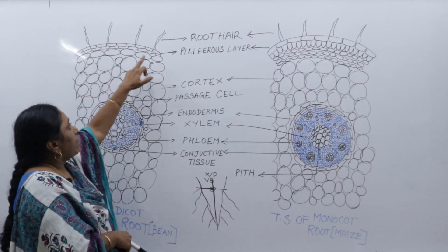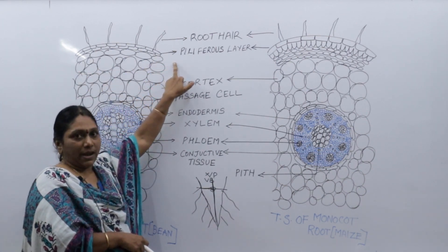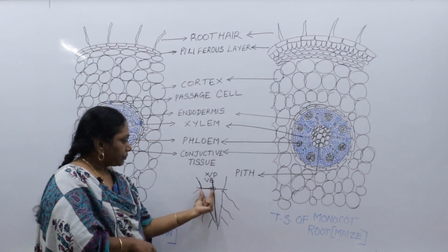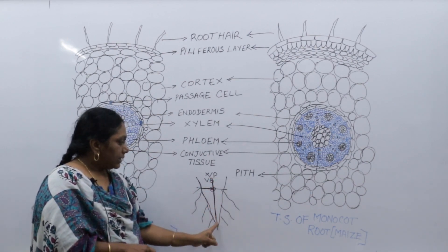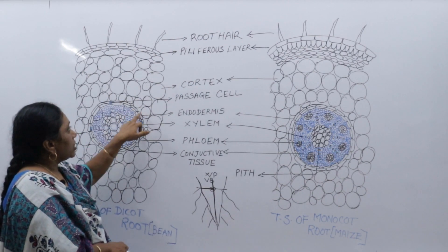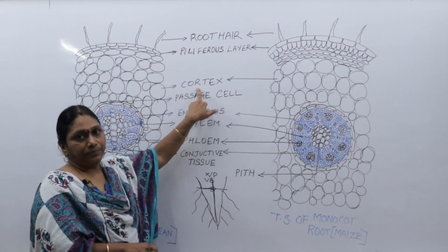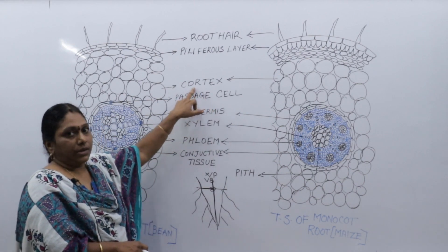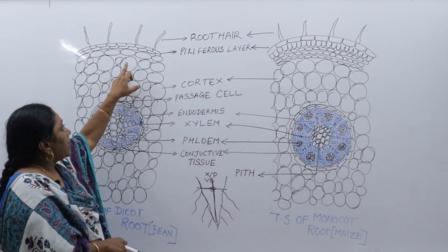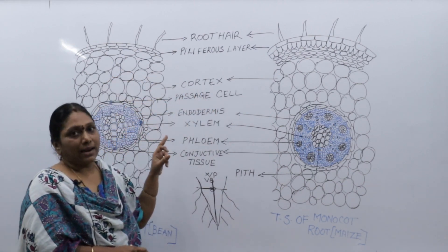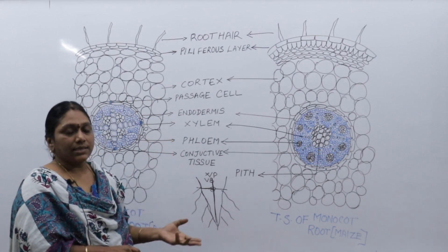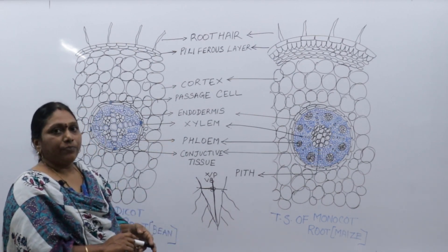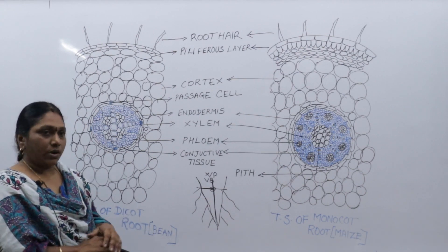The outer layer is also called as piliferous layer. From the outer layer till the vascular bundles, this entire portion is called as cortex. Cortex is a part of ground tissue. Here in the root, it is made up of thin-walled parenchymatous cells, which are meant for storing food and water.